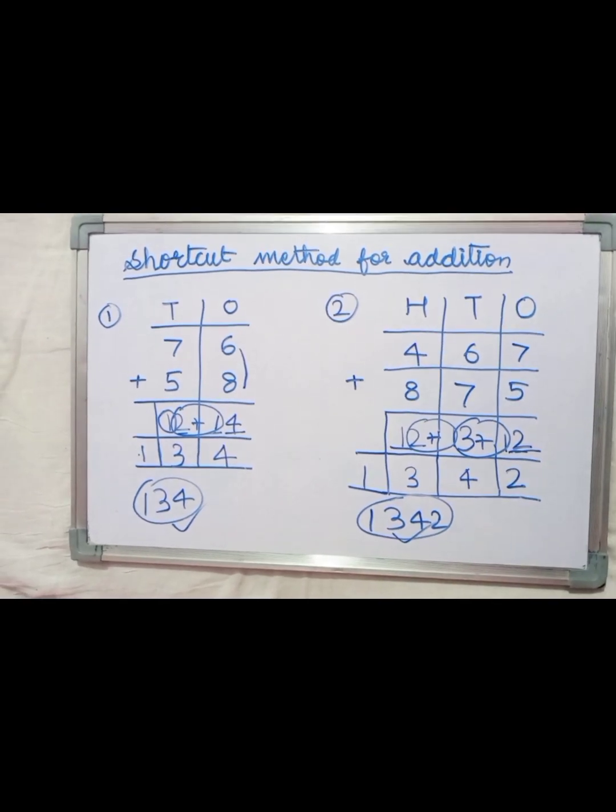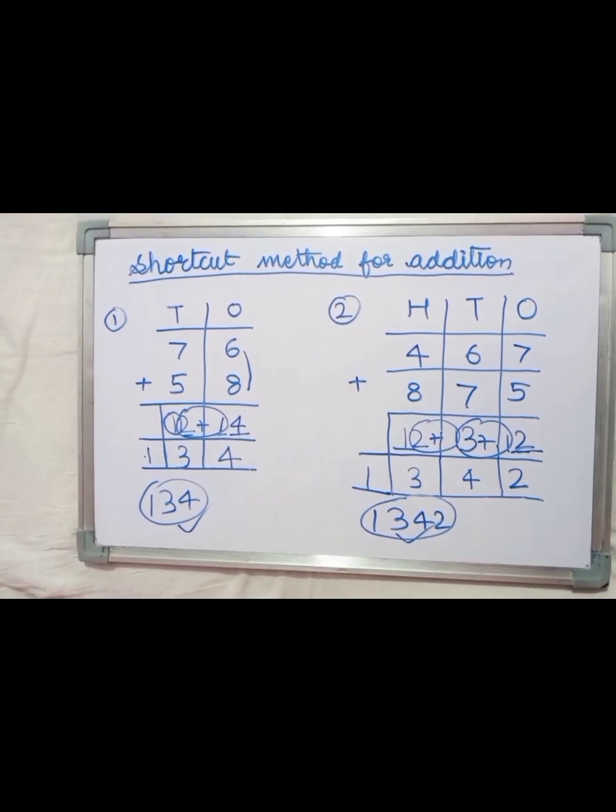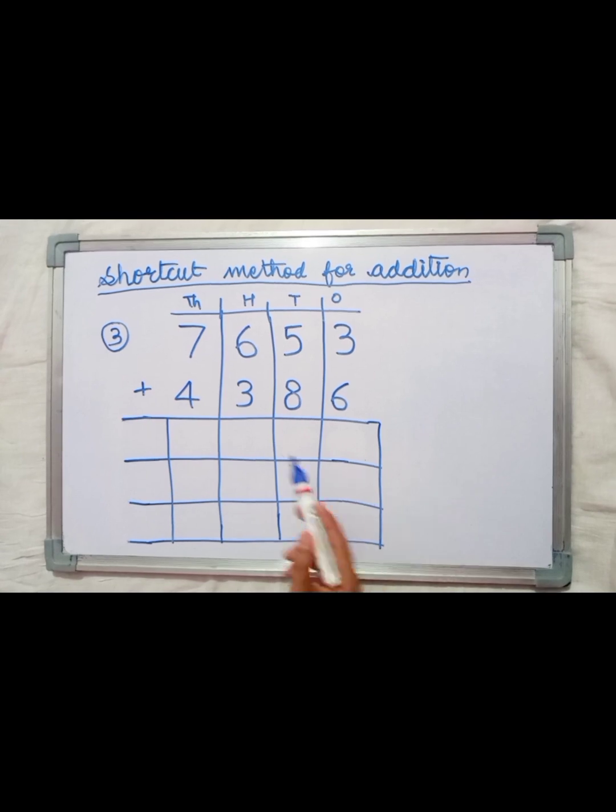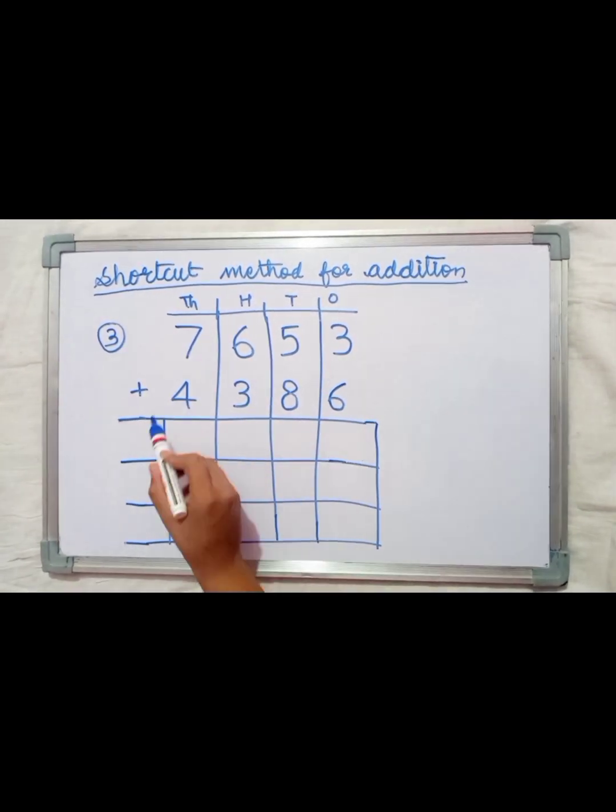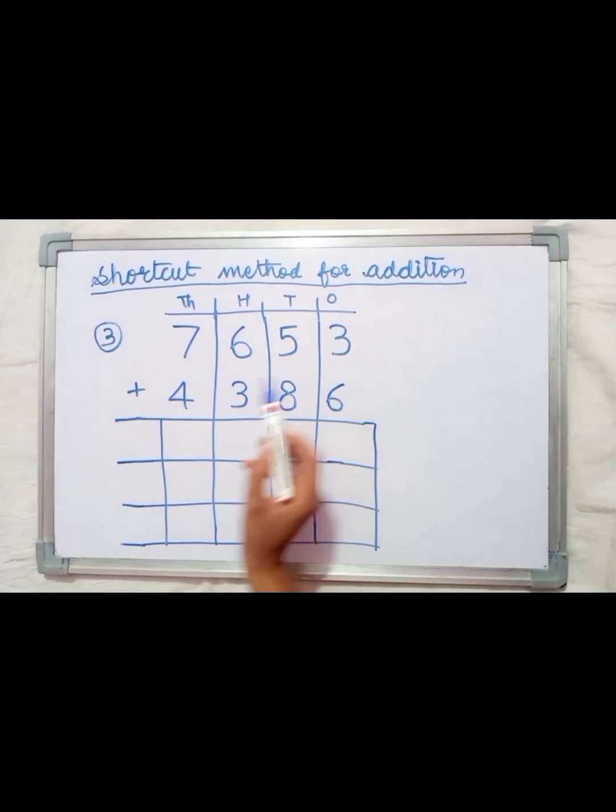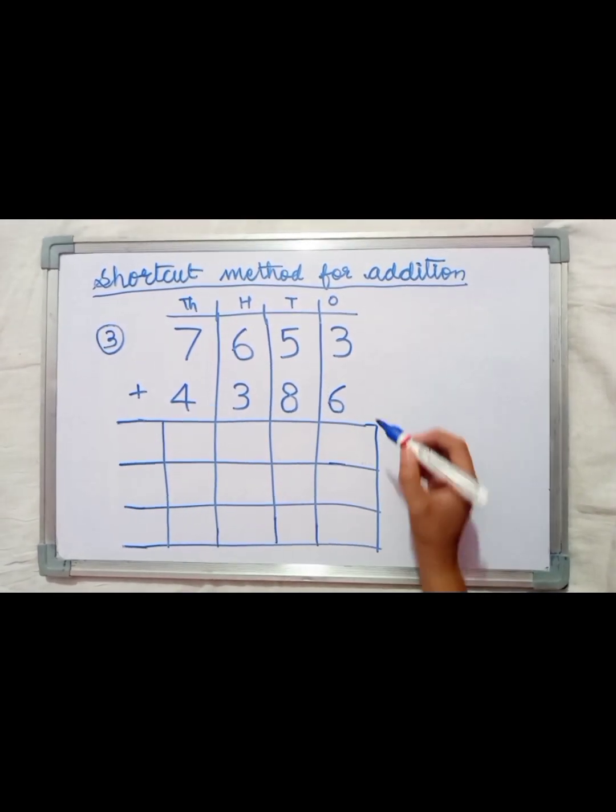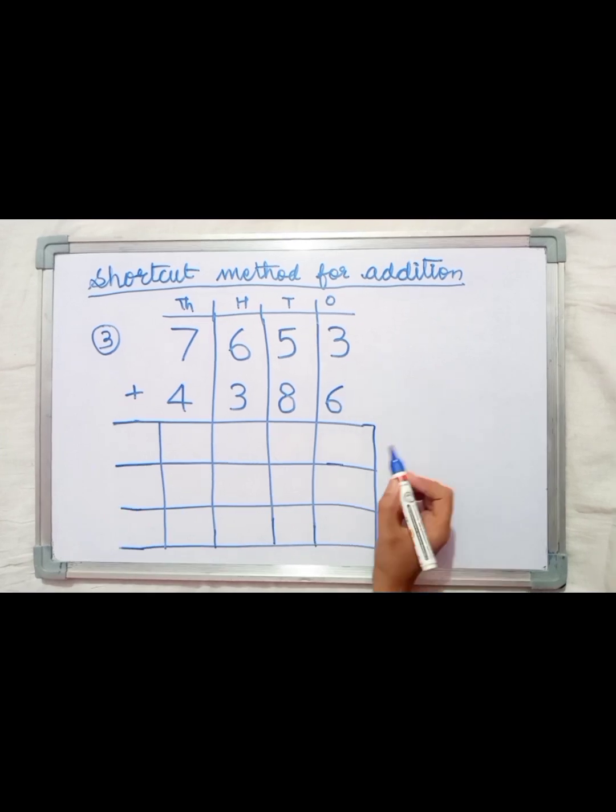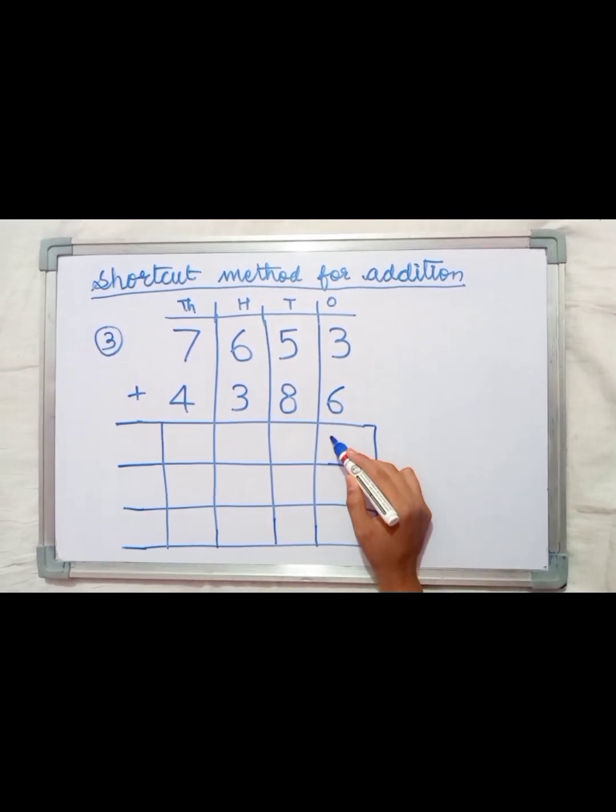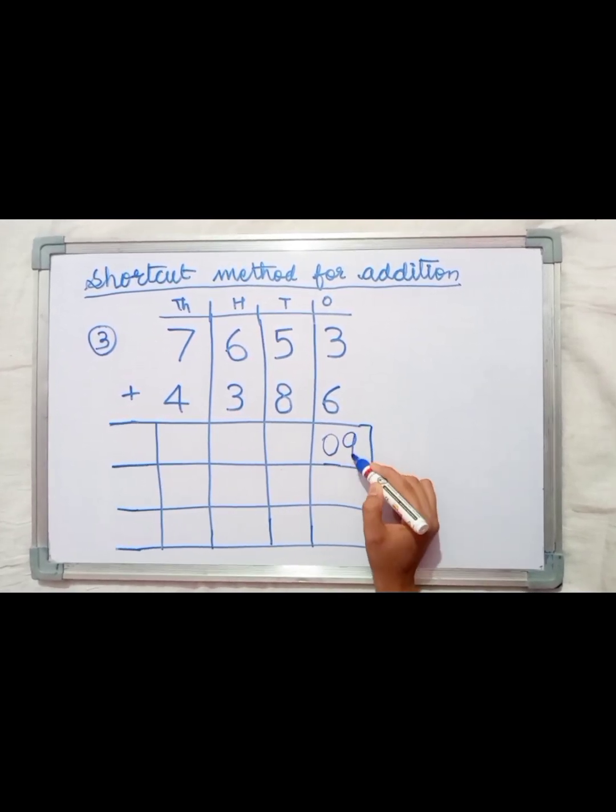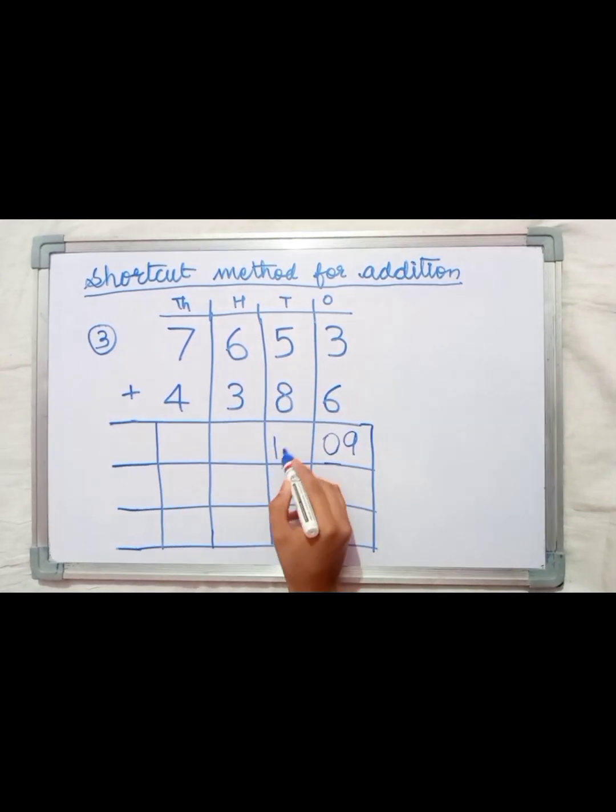To make it clearer, let's take one more example. We have a four-digit number: 7653 plus 4386. Let's add. 3 plus 6 equals 9, so we write 09. 8 plus 5 equals 13.